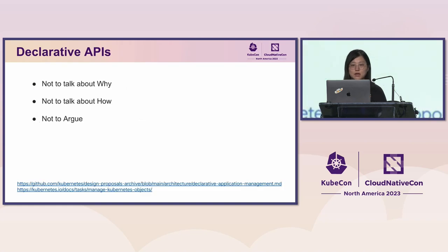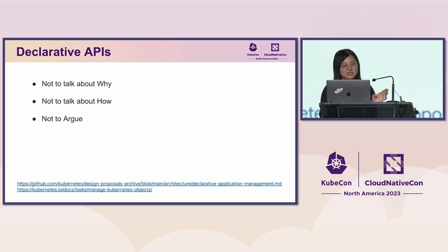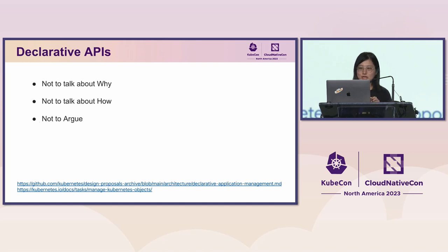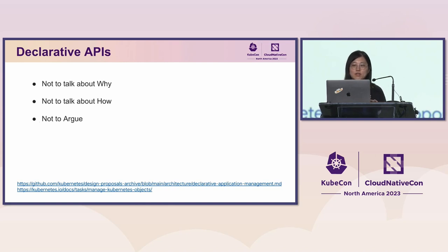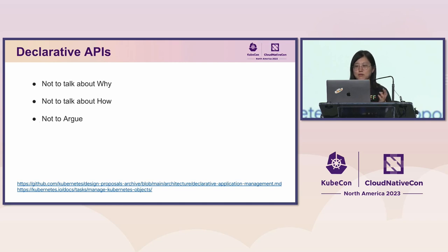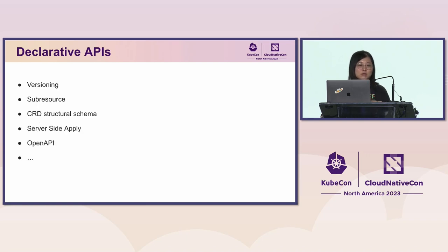Before we go any further, I'd love to set the stage. I will not get into the back story of why we went declarative — that decision was made roughly 10 years ago. There's a fantastic resource linked here from Kubernetes' early stage, authored by Brian Grant. We won't be going deep into the inner workings of the control loop either. And I'm not here to argue one approach over the other — Kubernetes offers ability for both imperative and declarative, and will continue to do so.